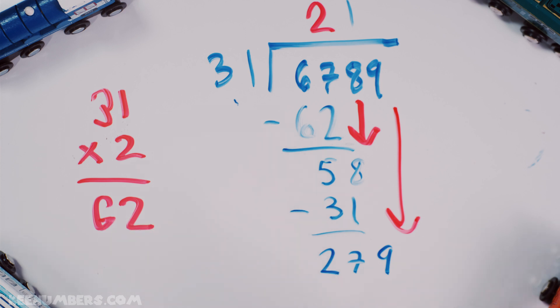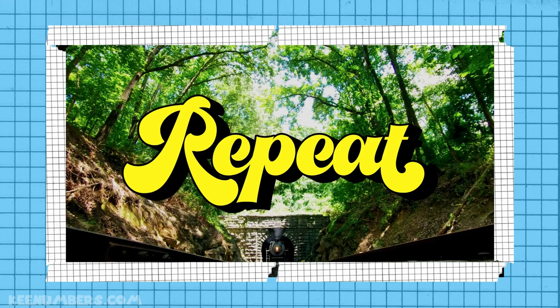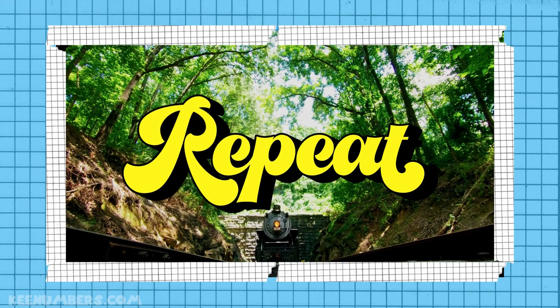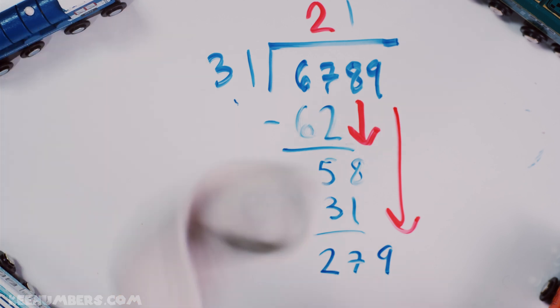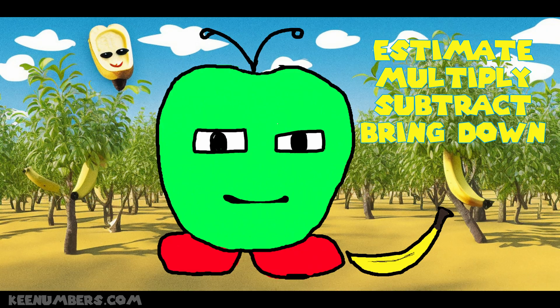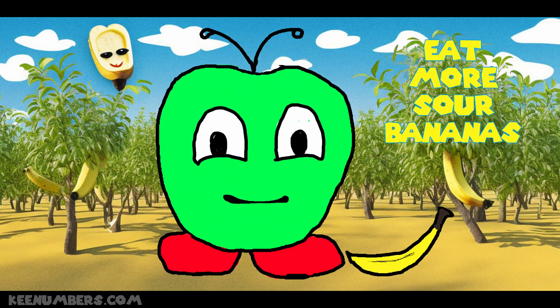Whoa. This is pretty advanced. But, here's the good news. This is the really good news. When we repeat here and we estimate. That's step 1. Eat more sour bananas. Estimate.